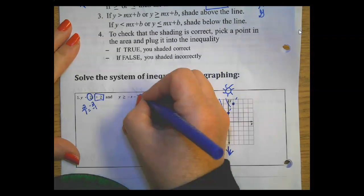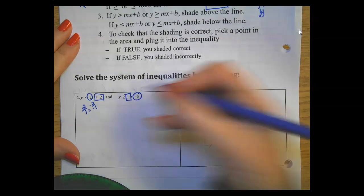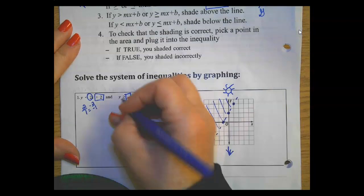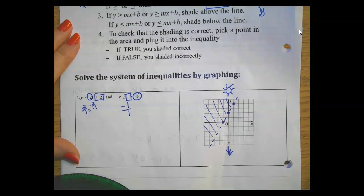The next one, here is my y-intercept and here is my slope. Well that just says negative x, which means negative 1 or negative 1 over 1.